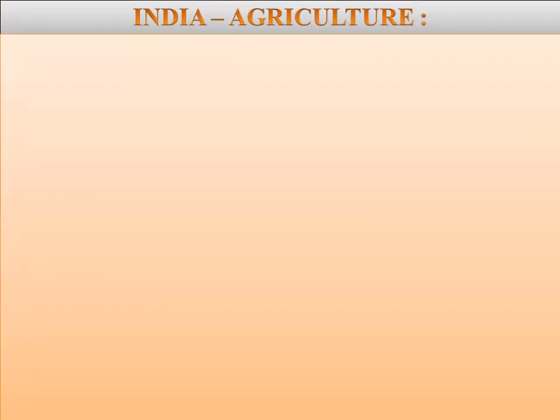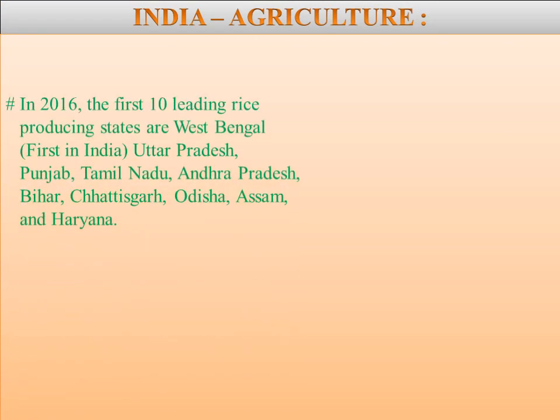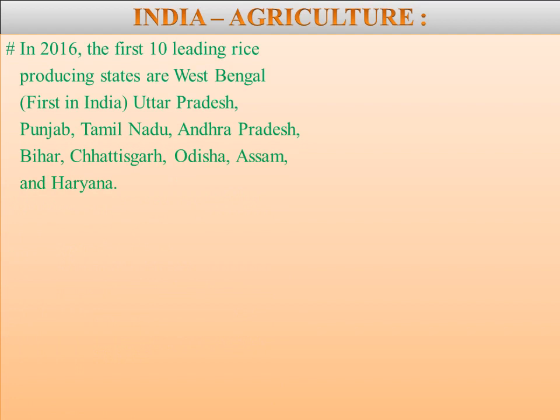In 2016, the first ten leading rice producing states in India are: West Bengal (first), Uttar Pradesh, Punjab, Tamil Nadu, Andhra Pradesh, Bihar, Chhattisgarh, Odisha, Assam, and Haryana.